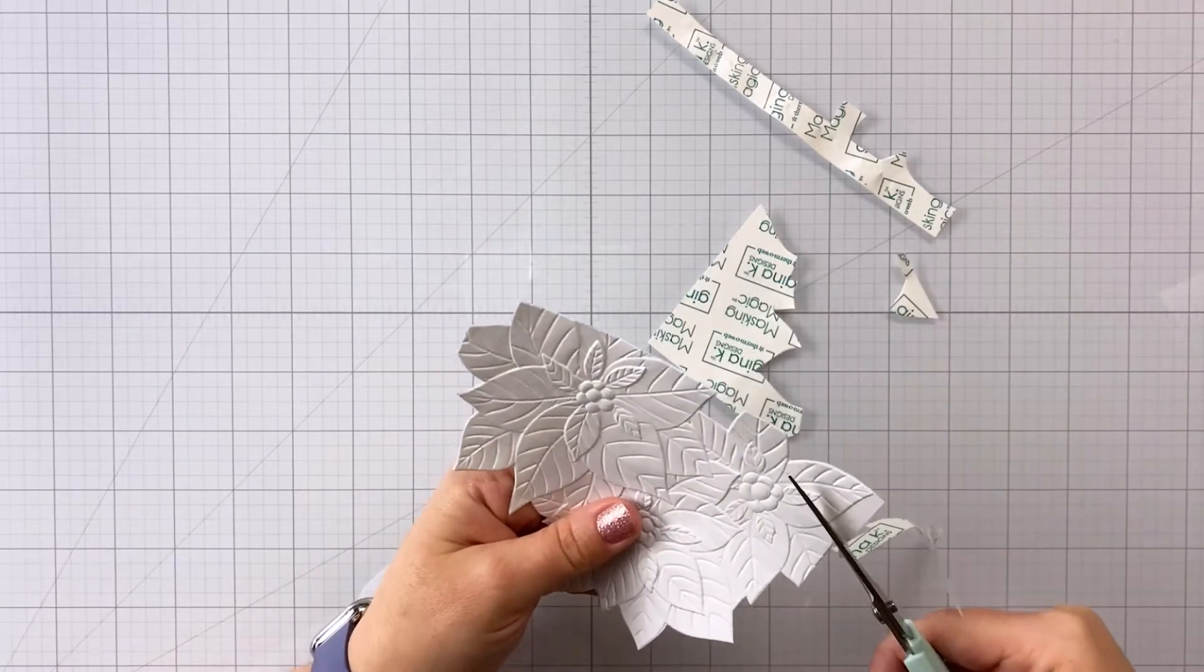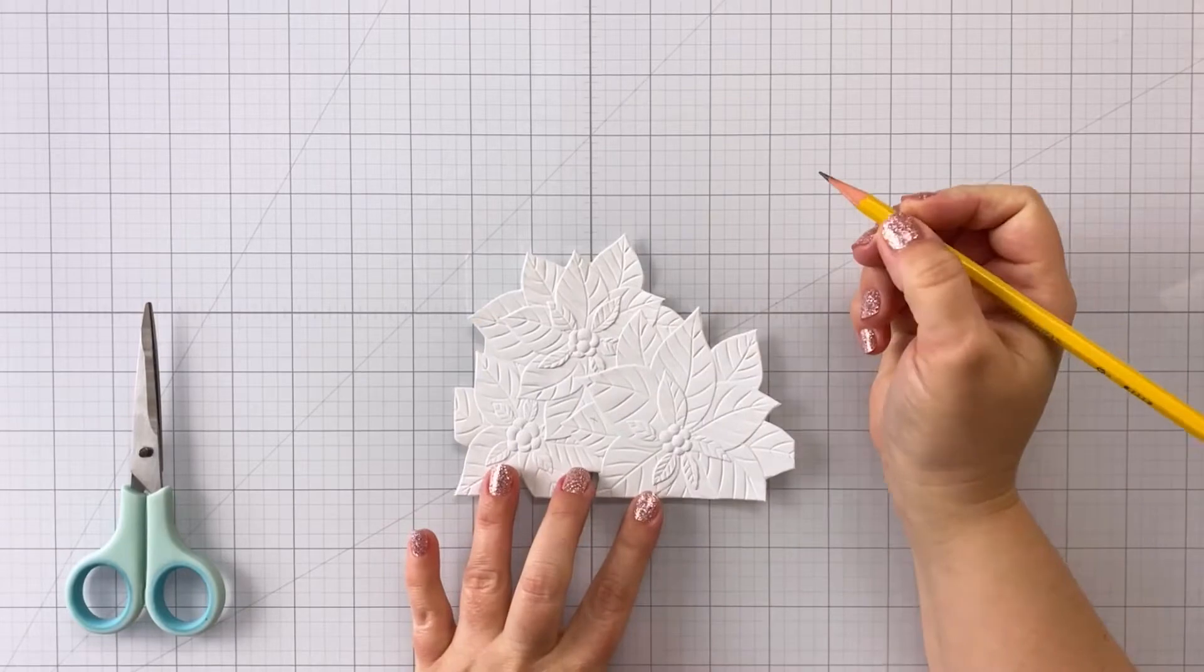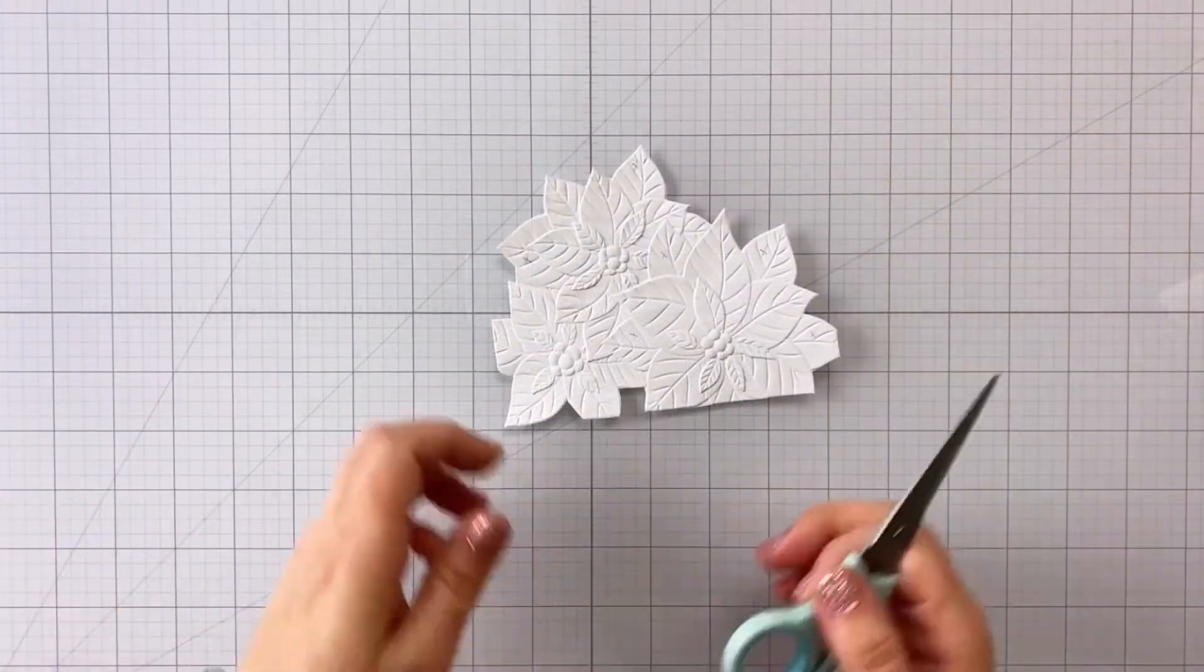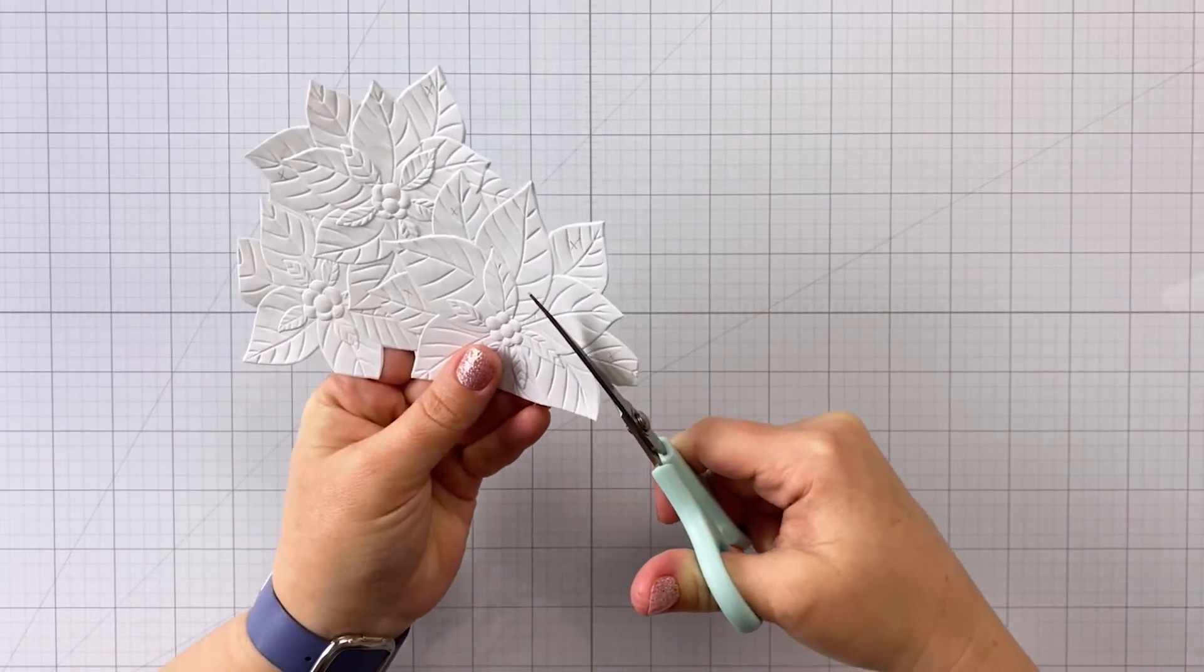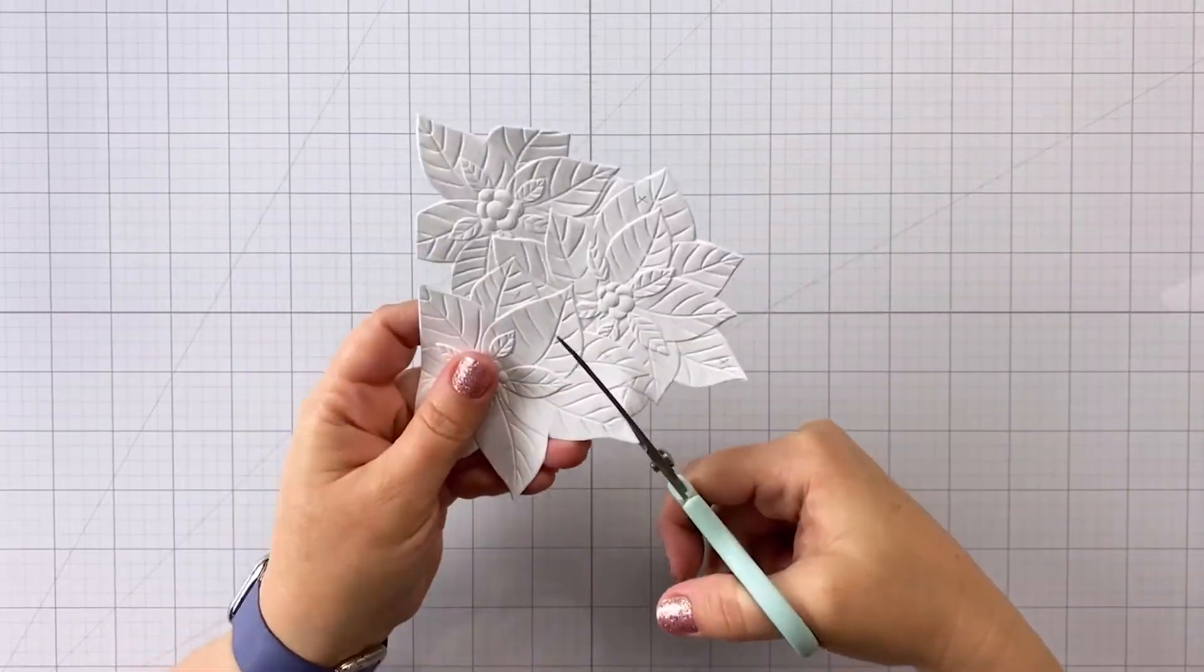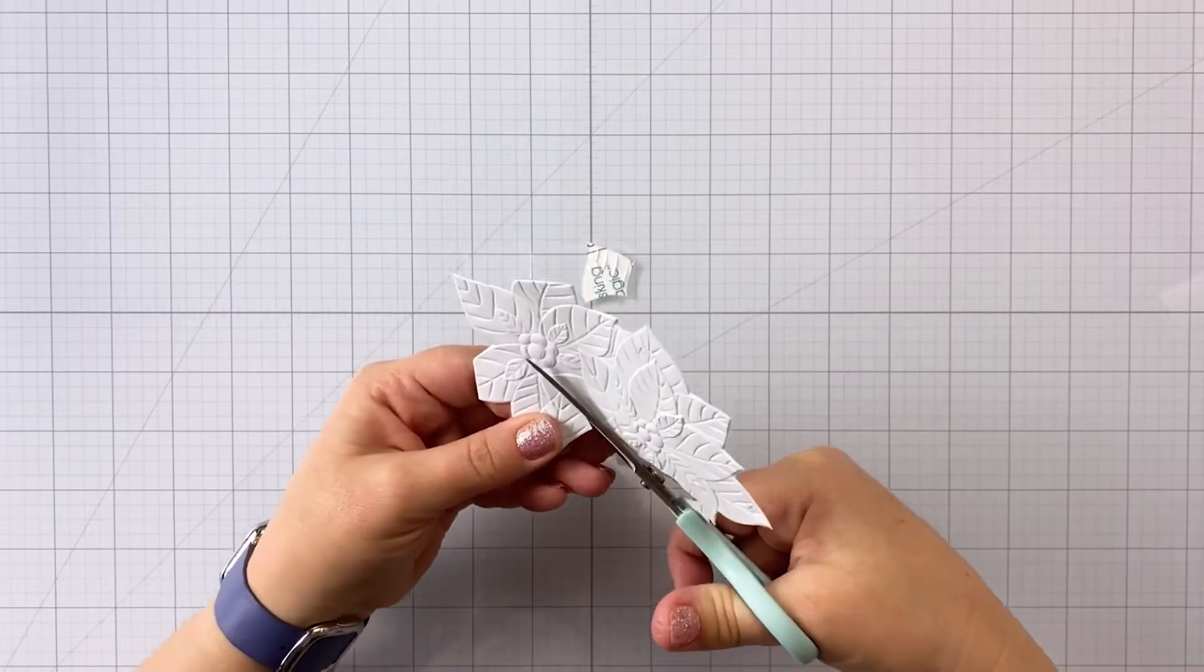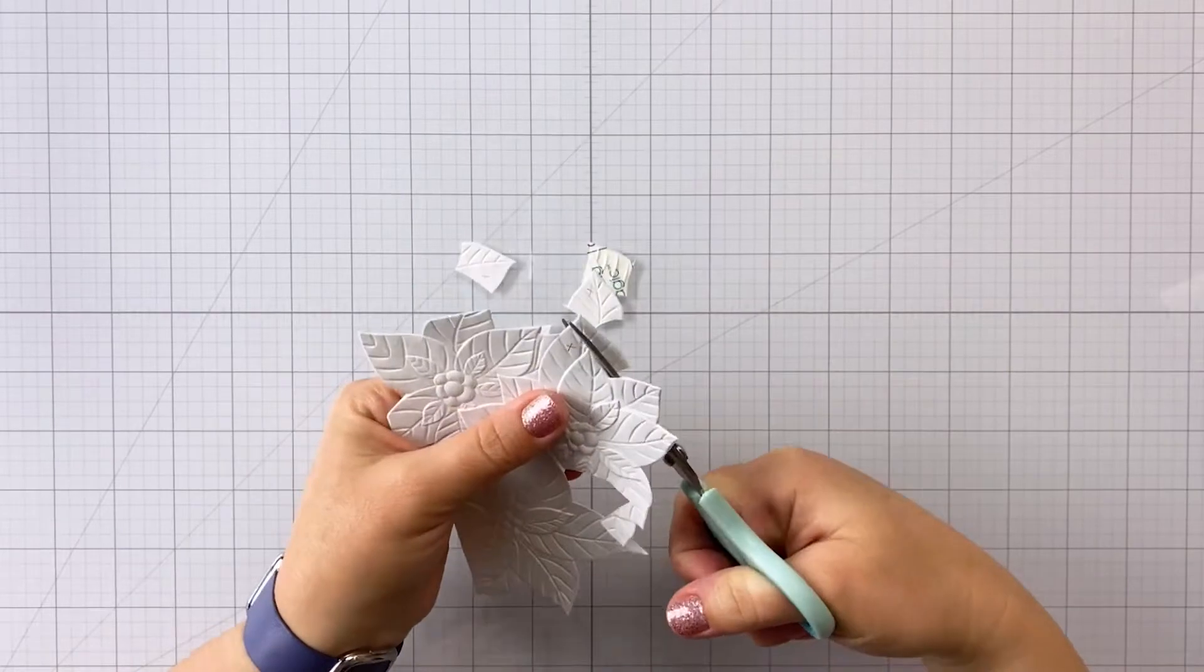So once I have the entire image of the poinsettia cluster cut out, I'm going to go in and decide what leaves I want to be a different color. And this will make more sense as we continue on. So I'm just putting an X on all of the leaves that I want to be green and I'm going to go in with my scissors and cut those out. Now I do want to be careful not to cut any of the rest of the image. I just want to be sure to cut along the lines. And the reason is because when we're done, we're going to have some beautiful red poinsettias, but then we're going to have some green leaves poking out here and there, and it's going to look really awesome.